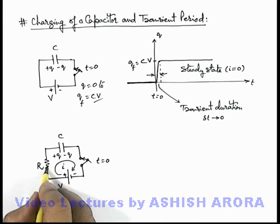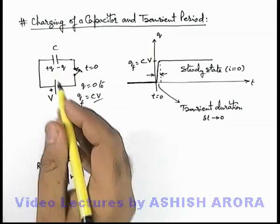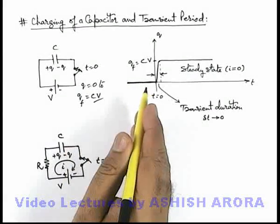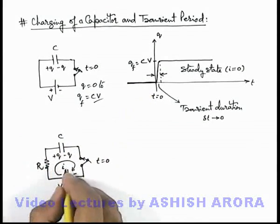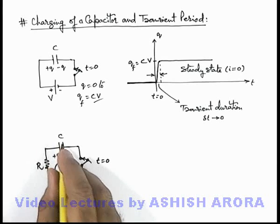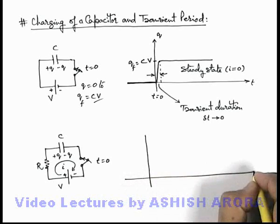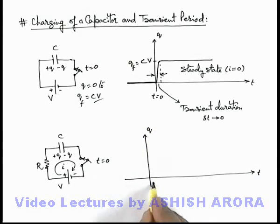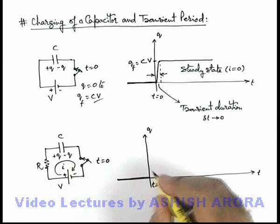Due to the presence of this resistance, current cannot be very high as compared to the previous case when current is excessively high and charging is accomplished within a negligible duration. Here, due to the value of resistance, the current is low and the charging of this capacitor will be gradual. If we plot the graph of charge on capacitor with time, up to t = 0 the charge was zero, and as soon as the switch is closed, gradually charging will start.